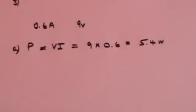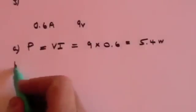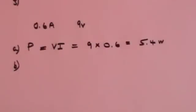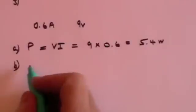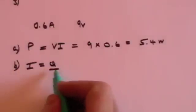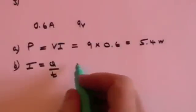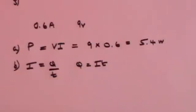The second question is if I leave the torch on for 20 minutes what charge do I use? And here we remember that current is charge over time which means that charge is equal to current times time.